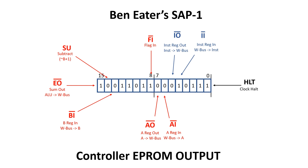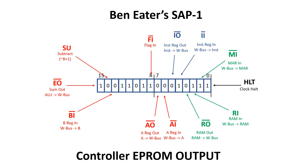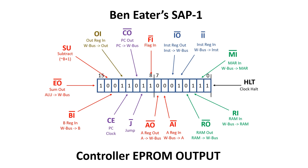We need another control line which determines whether we do an add or a subtract, and one to update the carry and zero flags. We need to be able to latch data into the memory address register, and we need some more control signals to determine whether we read from or write to the memory. We have three individual signals for controlling the program counter: an output signal which presents the value on the W bus, a jump signal which reads the value on the W bus into the program counter, and a count enable which just increments the program counter by one. Last but not least, we need a way of writing into our output register. There we have it — the full set of control signals for Ben's SAP1.